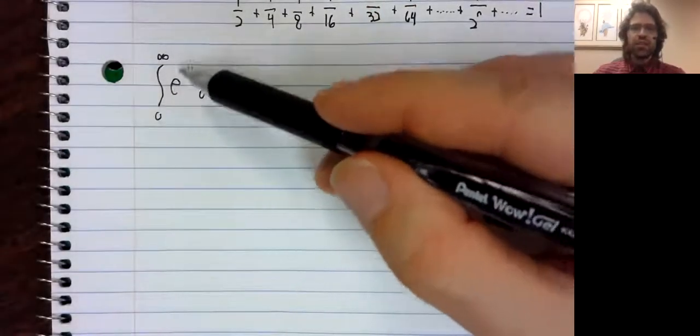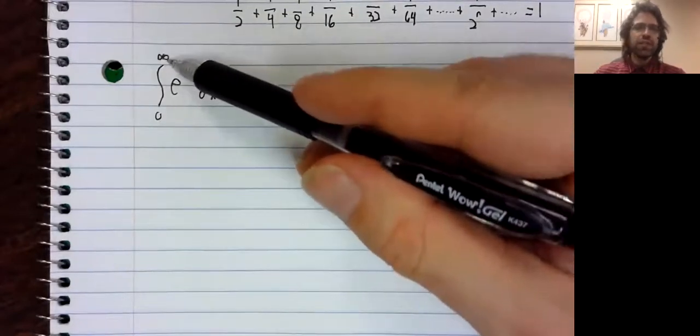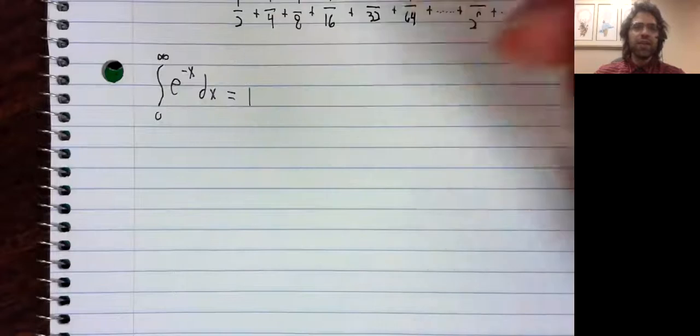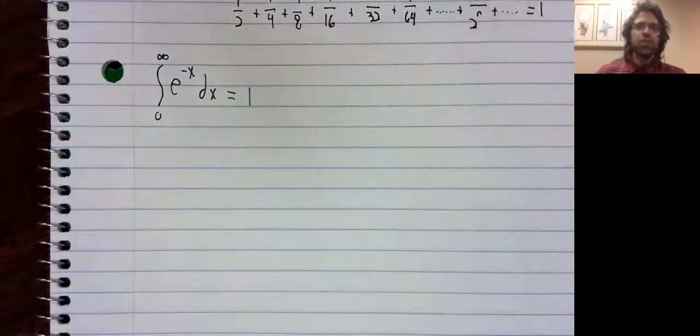I mean, this has an easy antiderivative, you replace the infinity symbol with a k, you take a limit, you do get one.